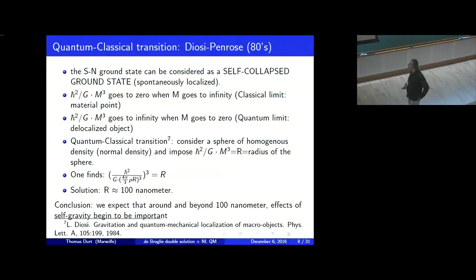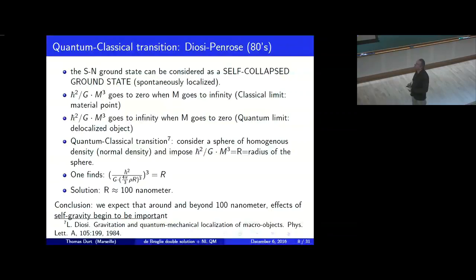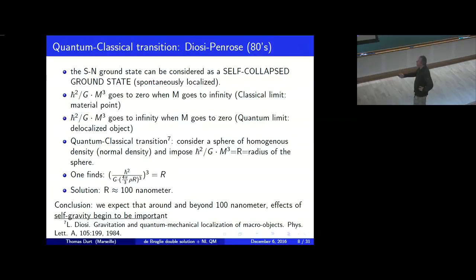With this simple model, you can already say things about the classical-quantum transition. The radius of the ground state goes to zero when the mass becomes large, corresponding to the classical limit where the soliton corresponds to a material point. Conversely, in the quantum limit — for an electron, atom, and similar objects — the Lieb radius is very large, going to infinity when the mass goes to zero. In that case, self-gravity doesn't play a role, and the object can be considered delocalized. Between these two extreme regimes, a quantum-classical transition appears naturally, as was pointed out by Diósi in 1994.